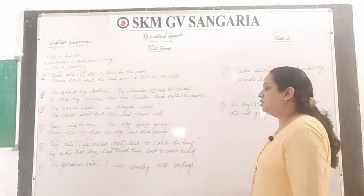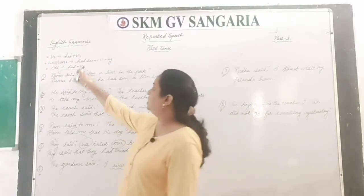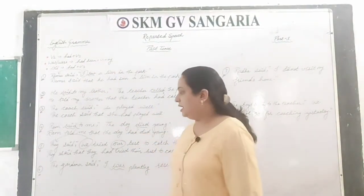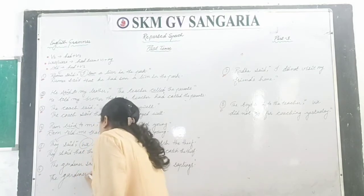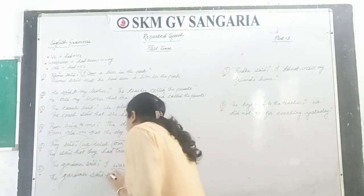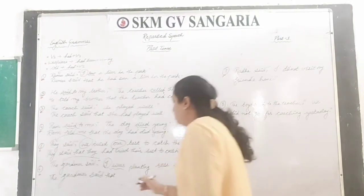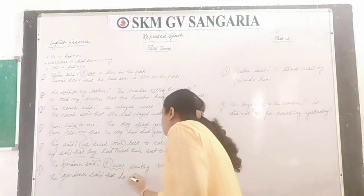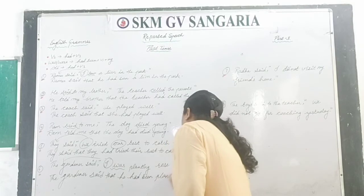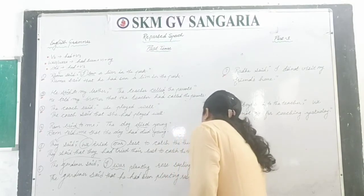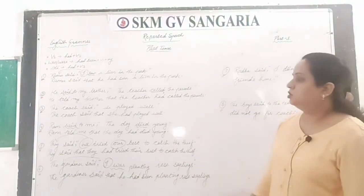The gardener said, 'I was planting rose saplings.' Here 'was' is given — when there is was/were, we change it with had been plus ing. 'I' changes to 'he' for the gardener. Answer: the gardener said that he had been planting rose saplings.